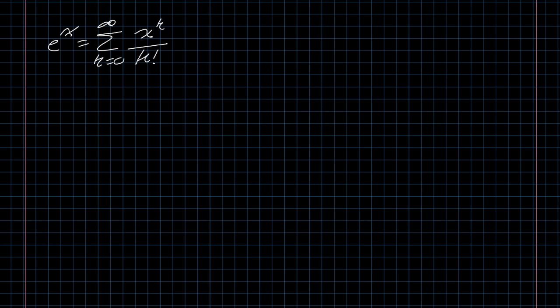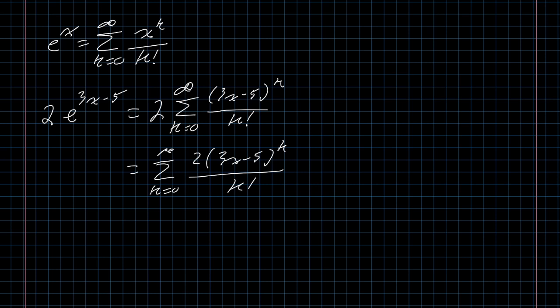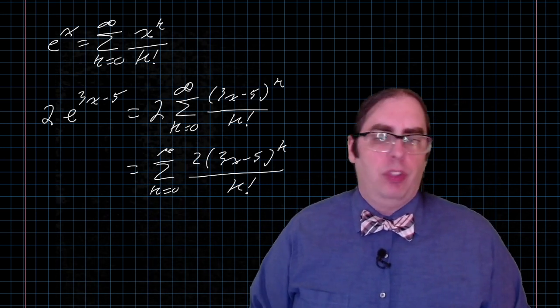Let's say that we needed to find the power series representation of 2 times e to the 3x minus 5. It works exactly the way you think it will. You're going to take your power series, you're going to multiply it by 2, and you're going to replace x with the new exponent. 3x minus 5 to the k over k factorial. And if you want to, you can distribute that 2 across the infinite degree polynomial and rewrite this as the sum, k goes from 0 to infinity, of 2 times 3x minus 5 to the k over k factorial.